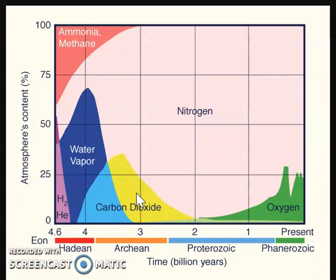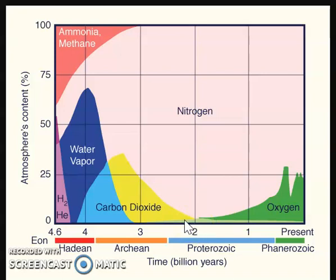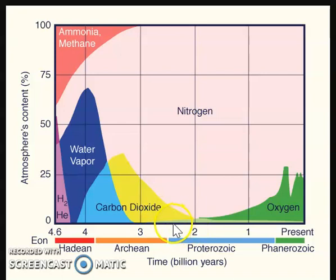Around 2 billion years ago, we lose a lot of that carbon dioxide and water vapor out of the atmosphere. This is a really key change in the composition of our atmosphere, as life begins to evolve somewhere in here.